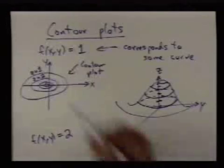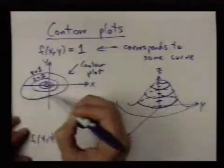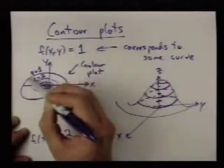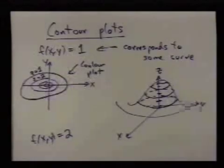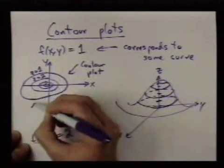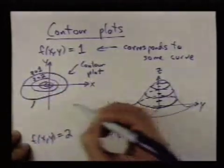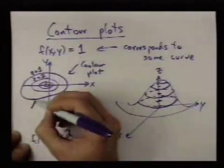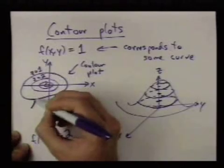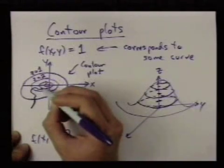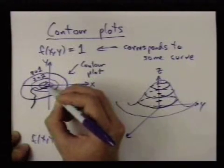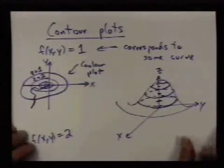So each line corresponds to a place where your function is at a constant value. And this is just like a topographical map, namely a map that tells you what height you're at. So if you're walking around in a mountain, this map will tell you, well, now I'm at height 1. If I move further, I get to height 2. If I move in here, now I'm at height 3, now I'm at height 4, and so forth. And that's the idea of a contour plot.